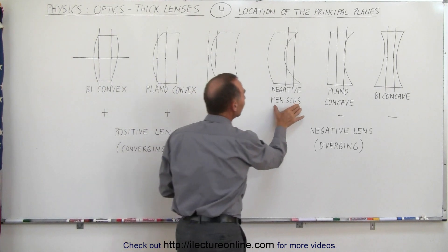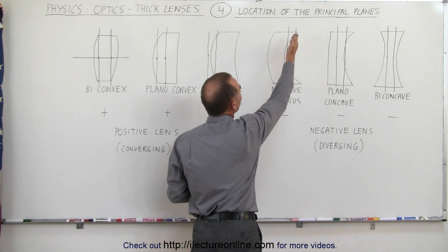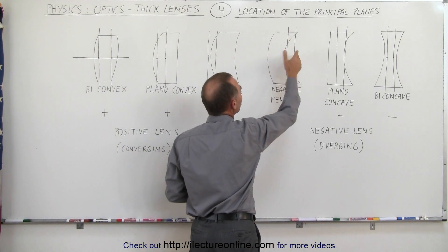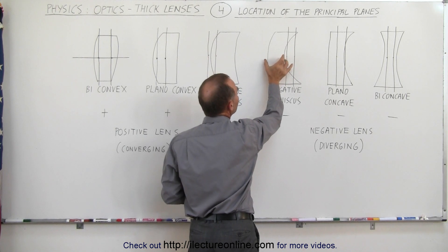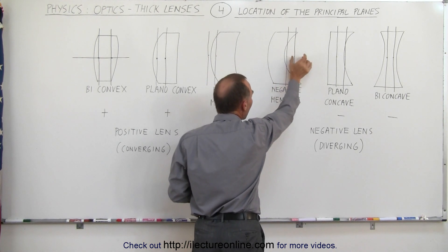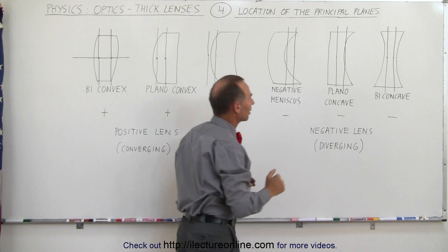In the case of a negative meniscus lens, notice that since the curvature is fairly large here, both principal planes can be on the other side of the lens, again outside the location where the lens actually is.